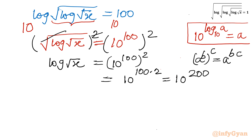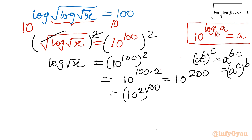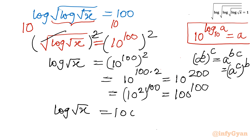Now I can consider 200, or I can write this as 10 raised to the power 2, whole power 100 — swapping the powers using the property of a^c whole power b. So I can write from here 100 power 100. So left hand side is log root x, right hand side is 100 power 100.